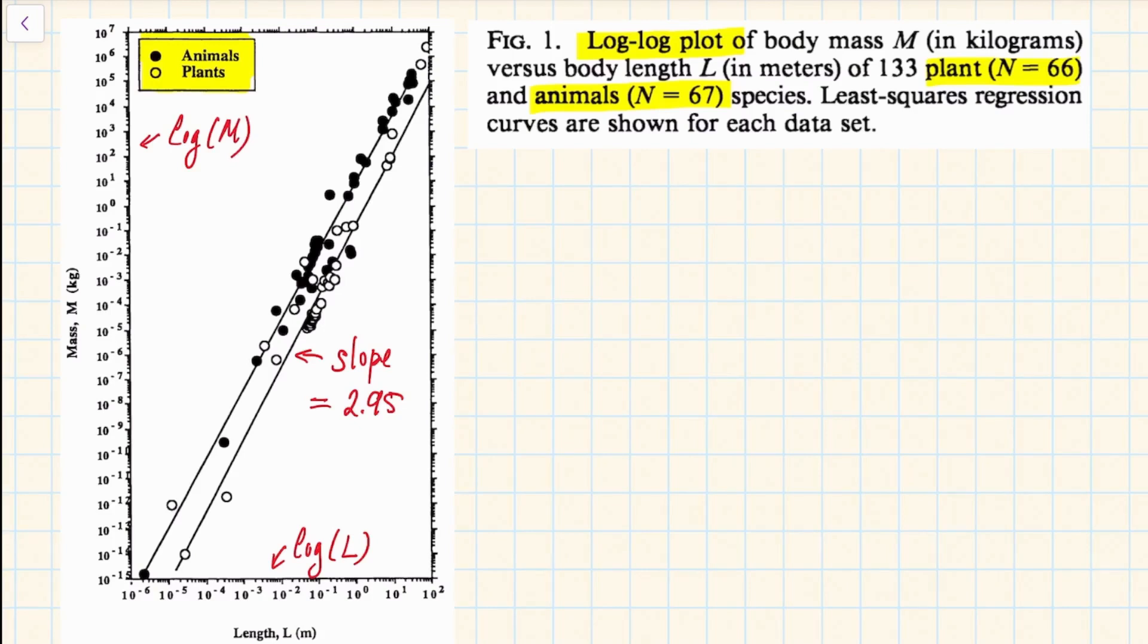So what this means is that if you look at some particular plant or animal species and you have length and mass of that species, before you graph you transform by taking the logarithm of the length and the logarithm of the mass.